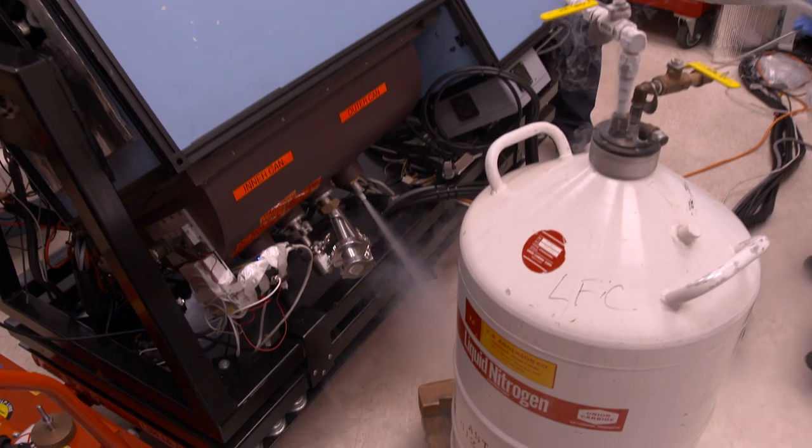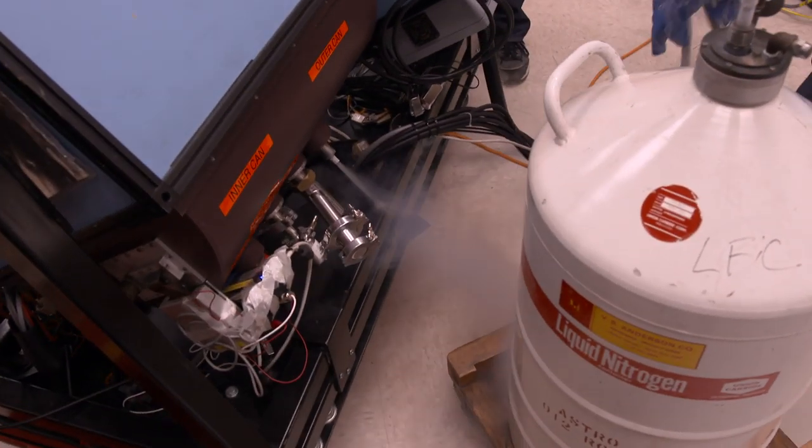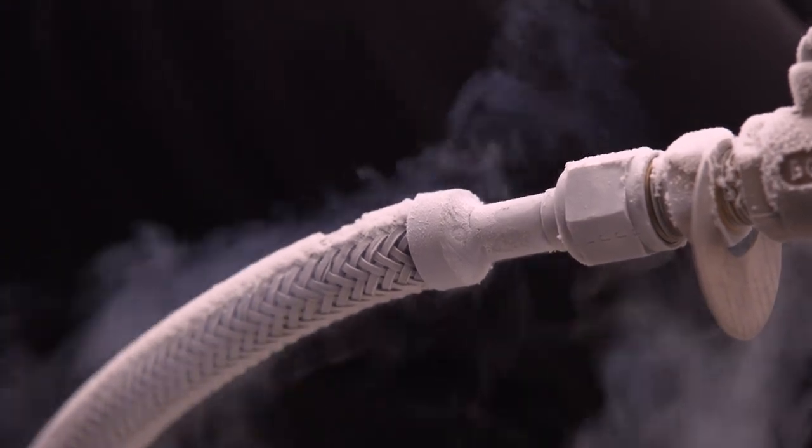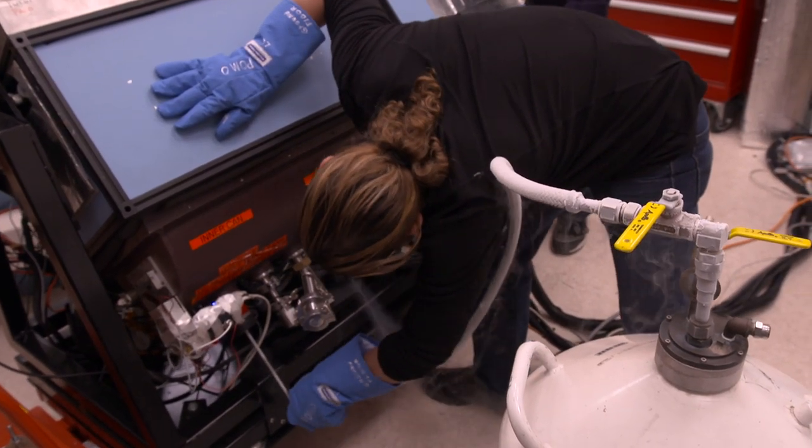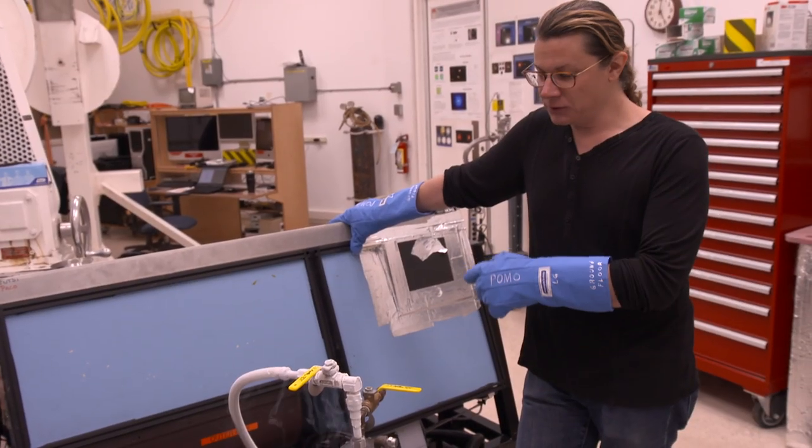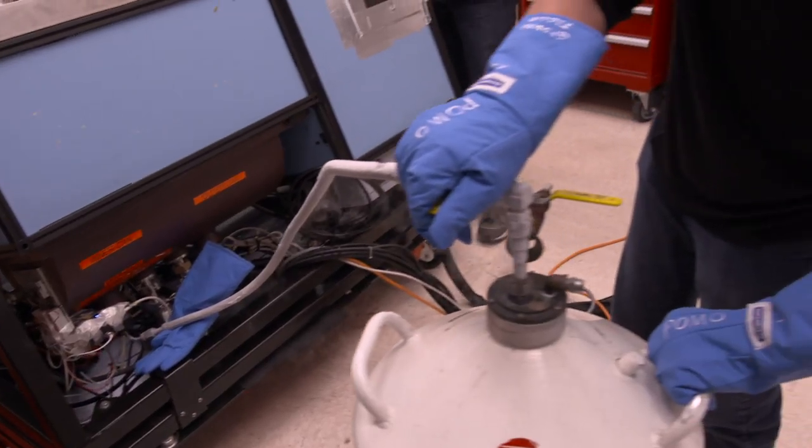We've just filled the infrared camera with liquid nitrogen in order to cool down the detector so that we can actually see planets and stars. And this is all in preparation for installing the instrument on the telescope tomorrow.